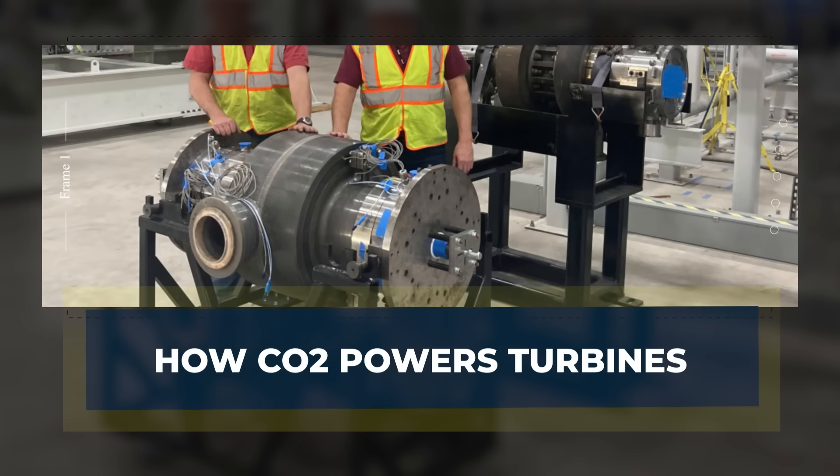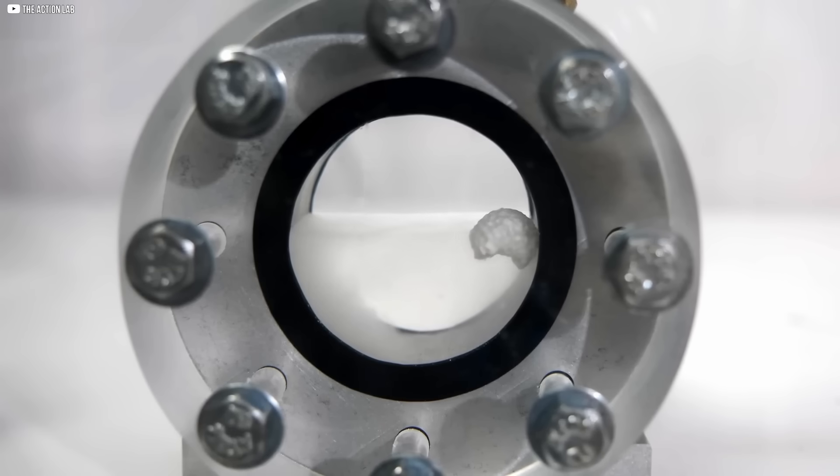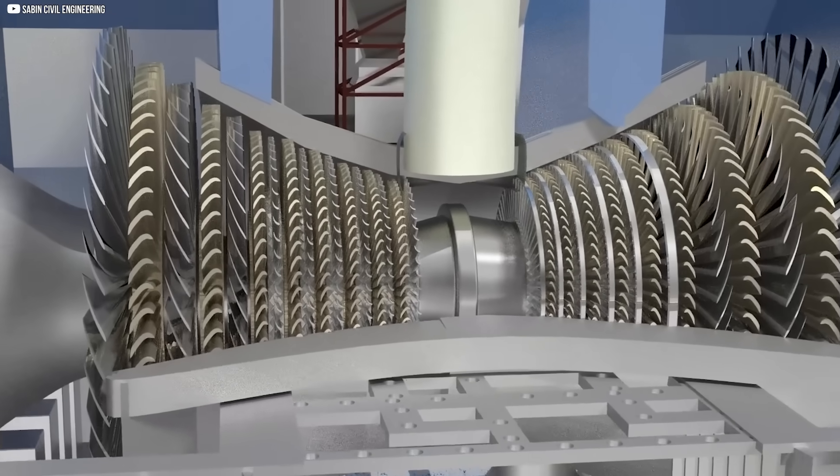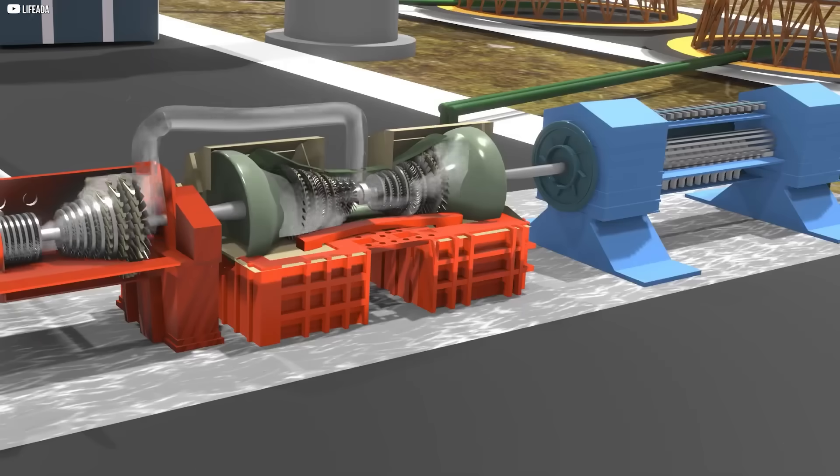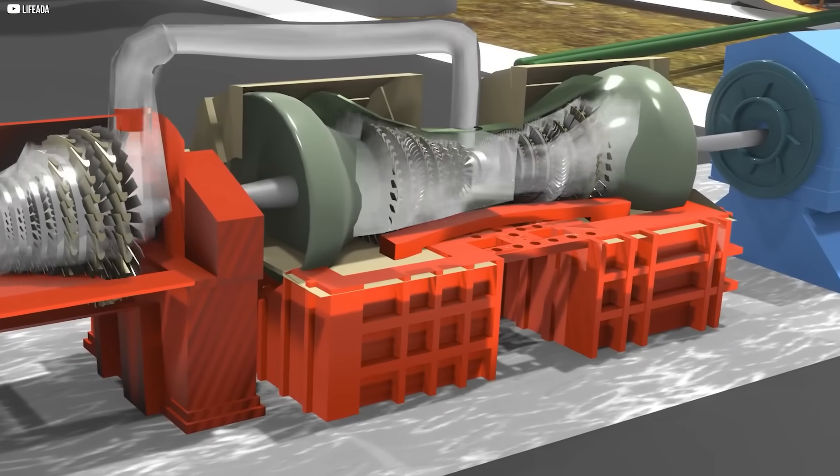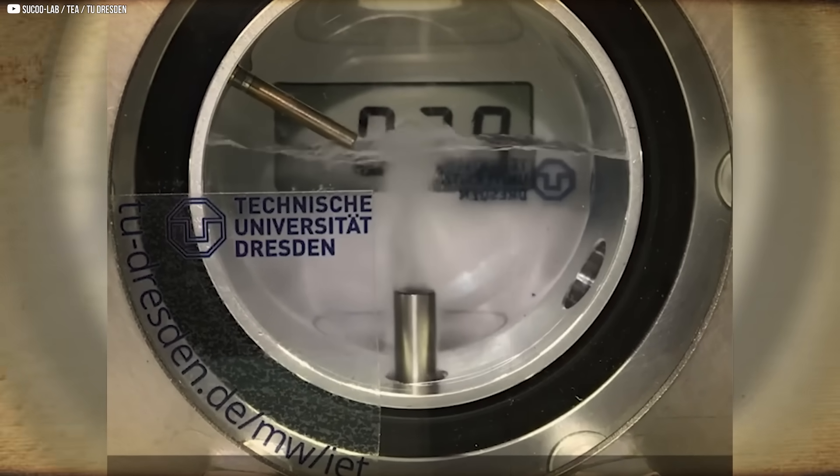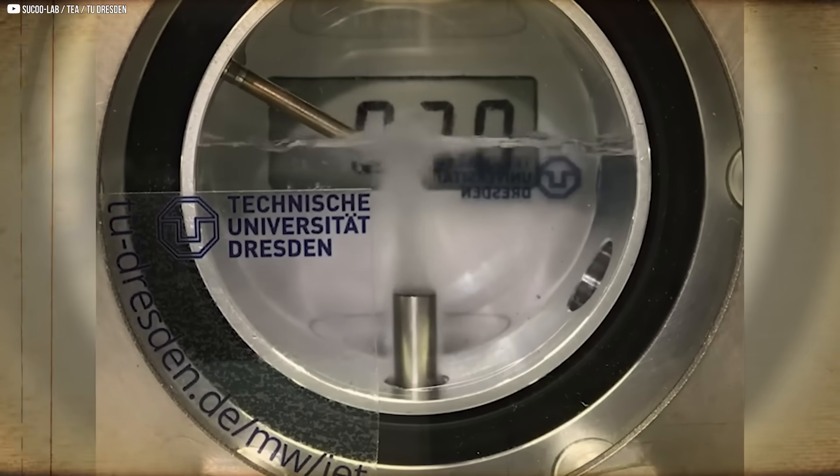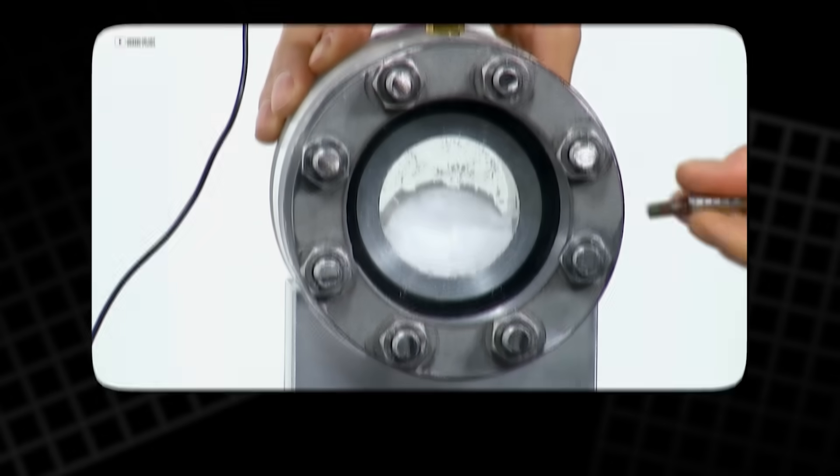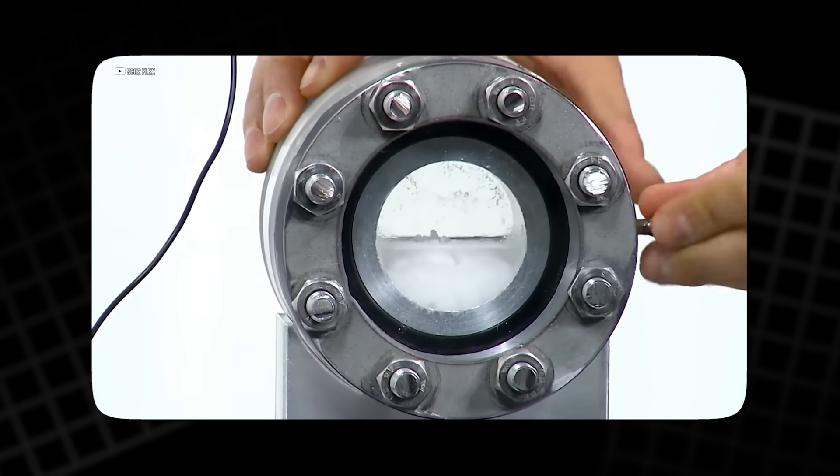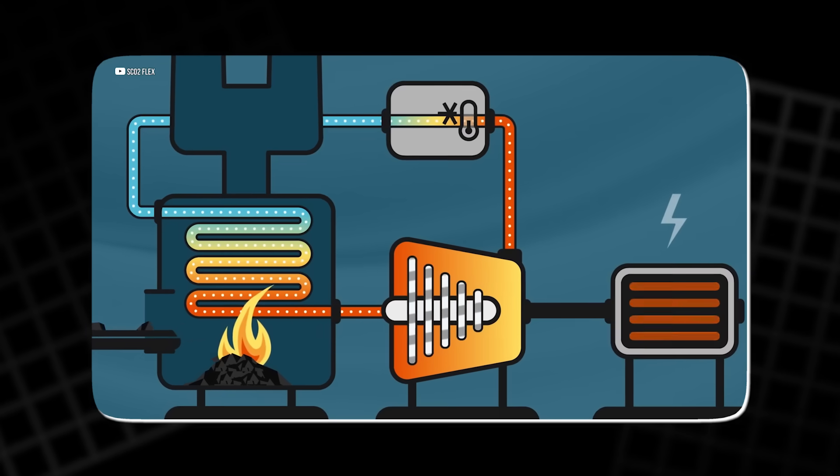How CO2 Powers Turbines. Now that we understand what supercritical CO2 is, let's explore how it works inside a turbine. The process is quite similar to traditional steam turbines, but with notable improvements. In a supercritical CO2 system, the CO2 is first compressed and heated. This causes the CO2 to expand rapidly, forcing it through a series of turbine blades.